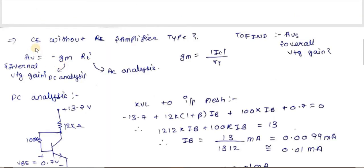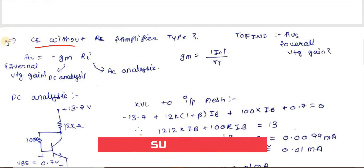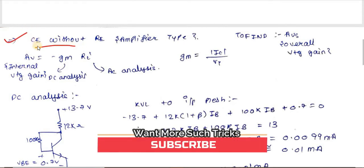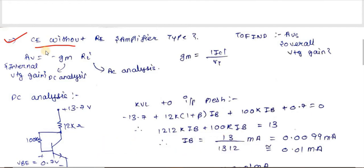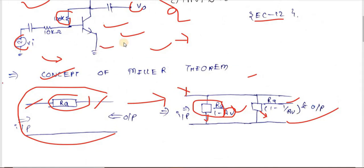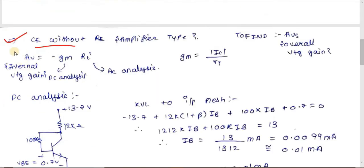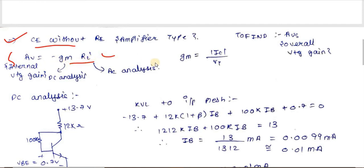The procedure is the same as solving a CE amplifier without Re. This circuit is clearly a common emitter amplifier without Re. The internal voltage gain formula is Av = −gm × RL', and gm = |Ic|/Vt = β/rπ. Since we don't have rπ directly, we'll use gm = |Ic|/Vt.